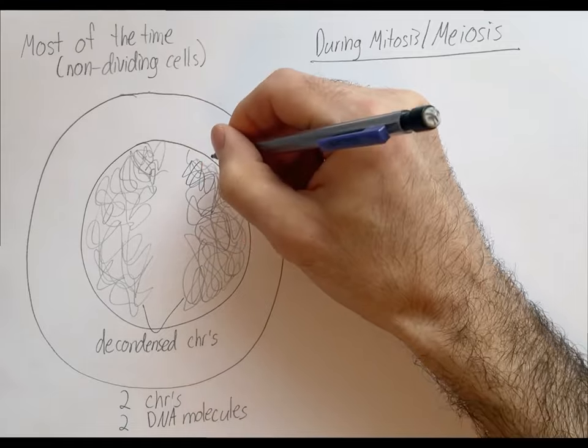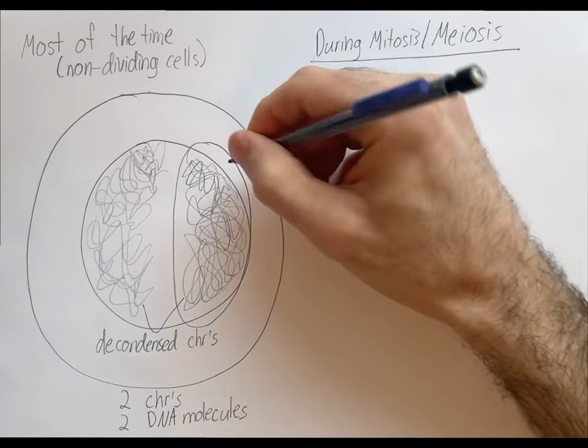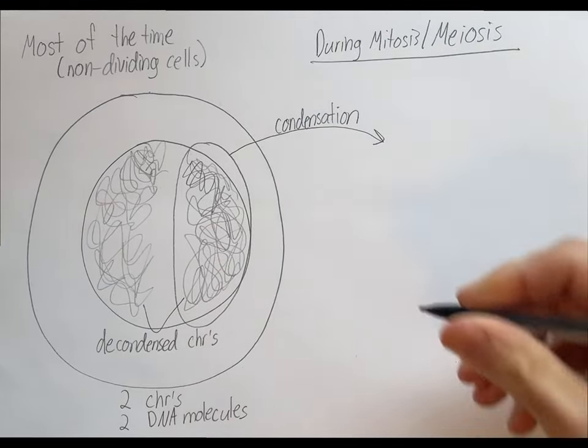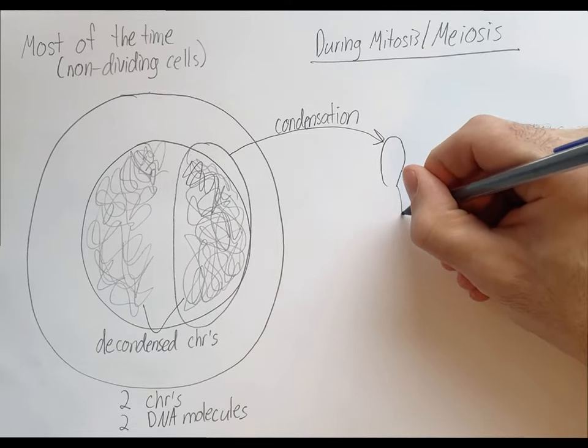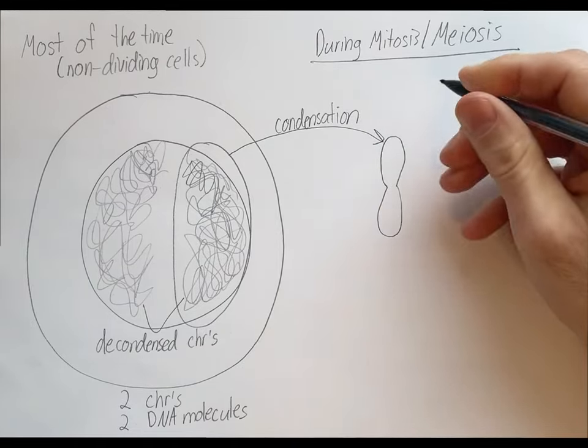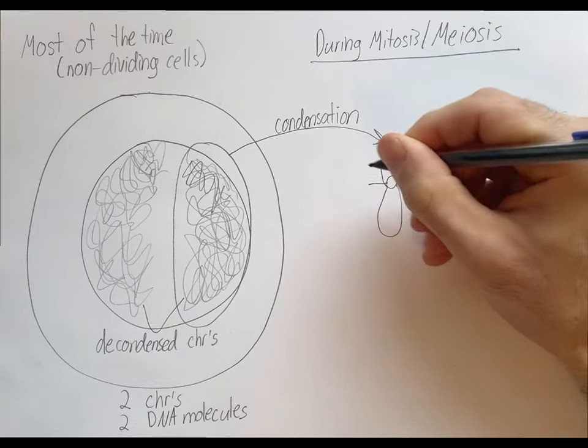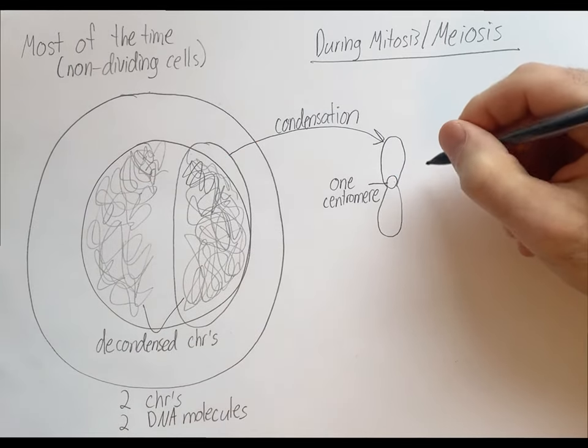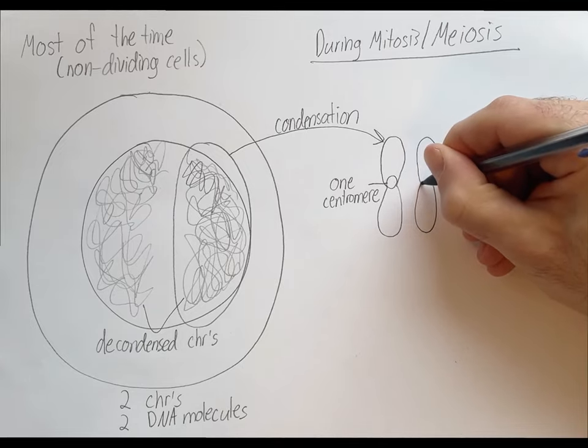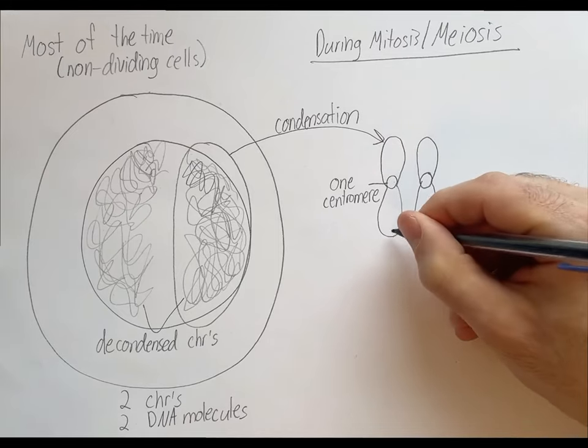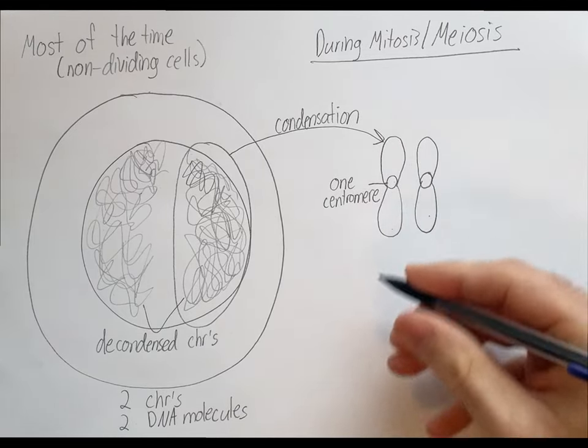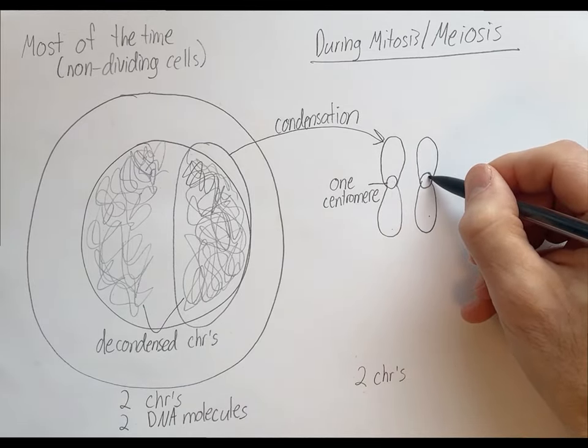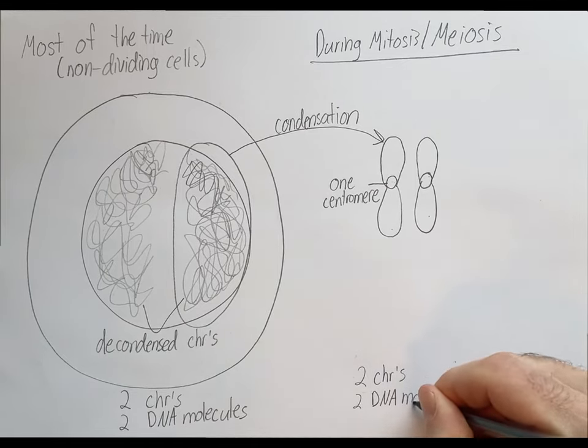Okay. Now, early on in cell division, these decondensed chromosomes undergo condensation, resulting in this type of structure, a condensed chromosome. And these are the chromosomes that you're probably accustomed to seeing. And this chromosome, each chromosome at this point has a centromere. And this is one centromere. Okay. And we can do that for this chromosome too. Let's write in the other chromosome as well. So this is one chromosome, and this is another chromosome. So here in this picture we have two chromosomes. And these two chromosomes are still two separate DNA molecules, and they always will be.